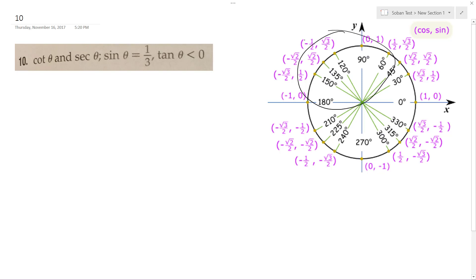So that means this is going to take place in quadrant 2. So 1 over 3.